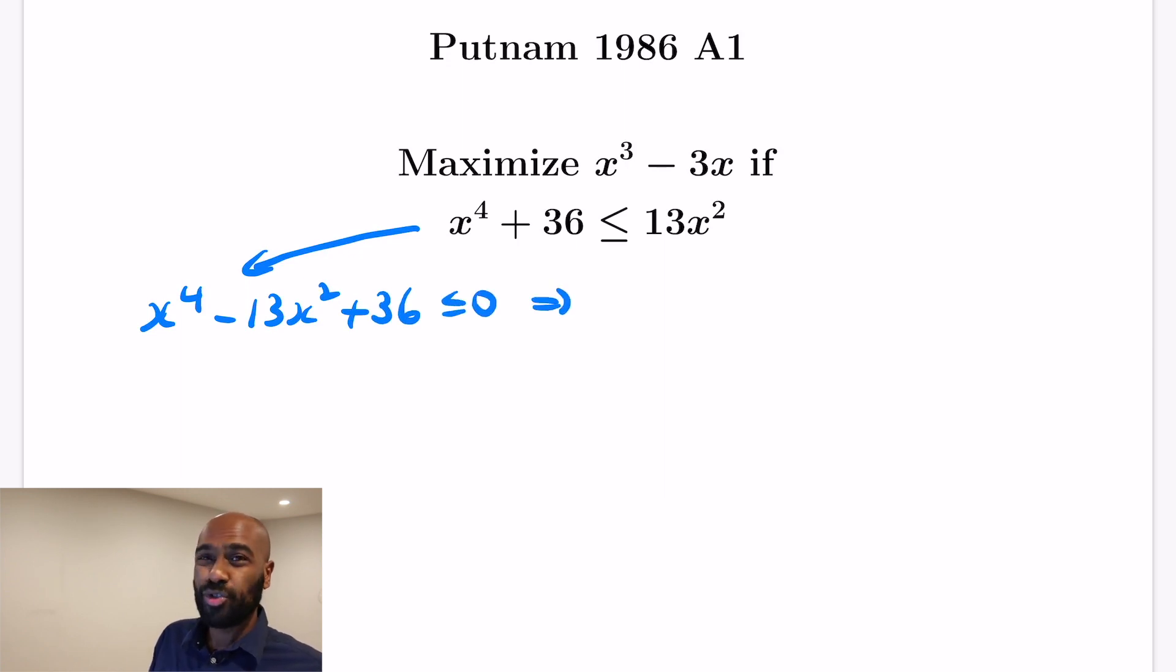Okay, if we think about this as a quadratic in x² itself, this factors since 36 is a product of 9 and 4, so we get (x² - 9)(x² - 4) ≤ 0.